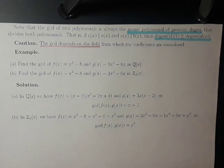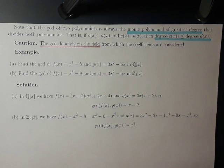Note that the GCD of two polynomials is always the monic polynomial of greatest degree that divides both polynomials. That is, if c of x is a common divisor of a of x and b of x, then the degree of c of x will always be less than or equal to the degree of the GCD of the two polynomials.